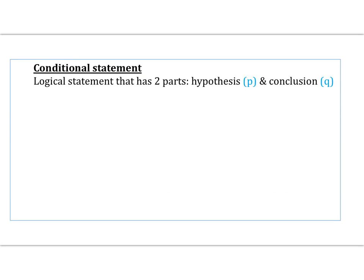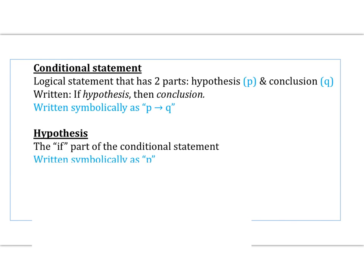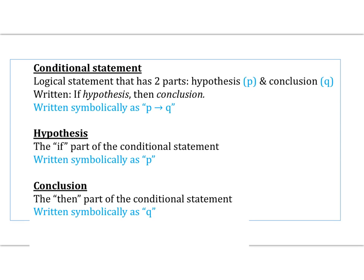In Section 2.1, we need to establish some key vocabulary used throughout the unit, starting with conditional statement, which is a logical statement that has two parts: the hypothesis, which we represent with P, and the conclusion, which we represent with Q. It's written: if hypothesis, then conclusion. Symbolically, we say P implies Q, using an arrow pointing in some direction. The hypothesis is the 'if' part, written symbolically as P. The conclusion is the 'then' part, written symbolically as Q.